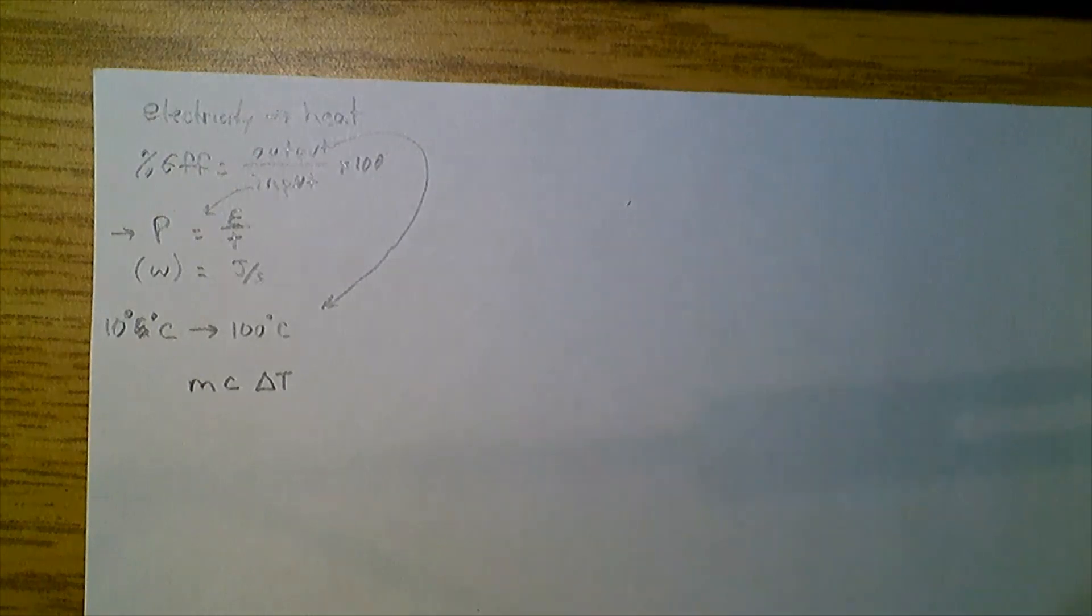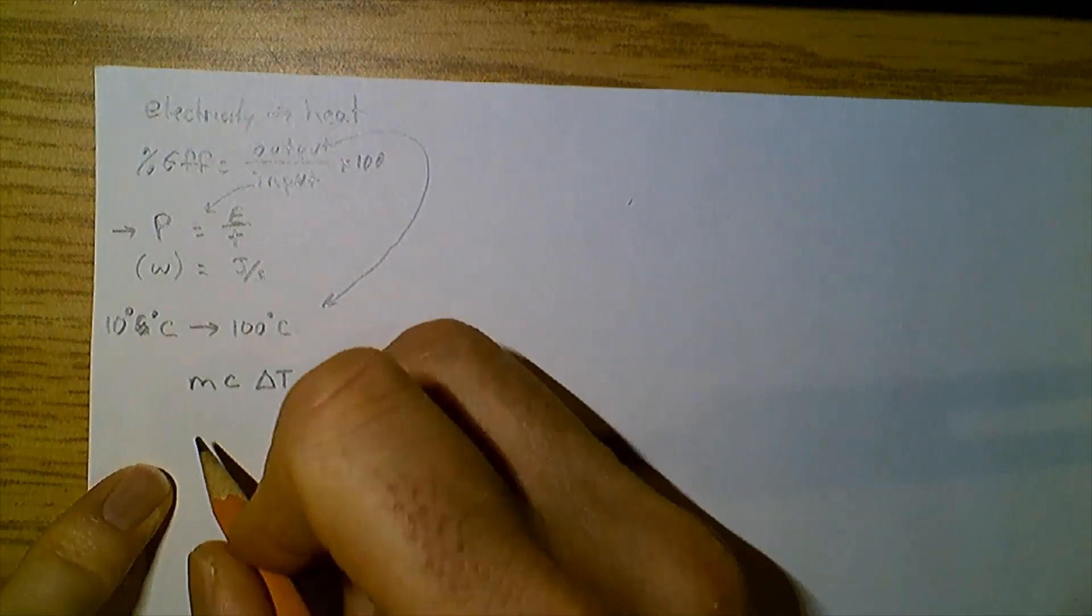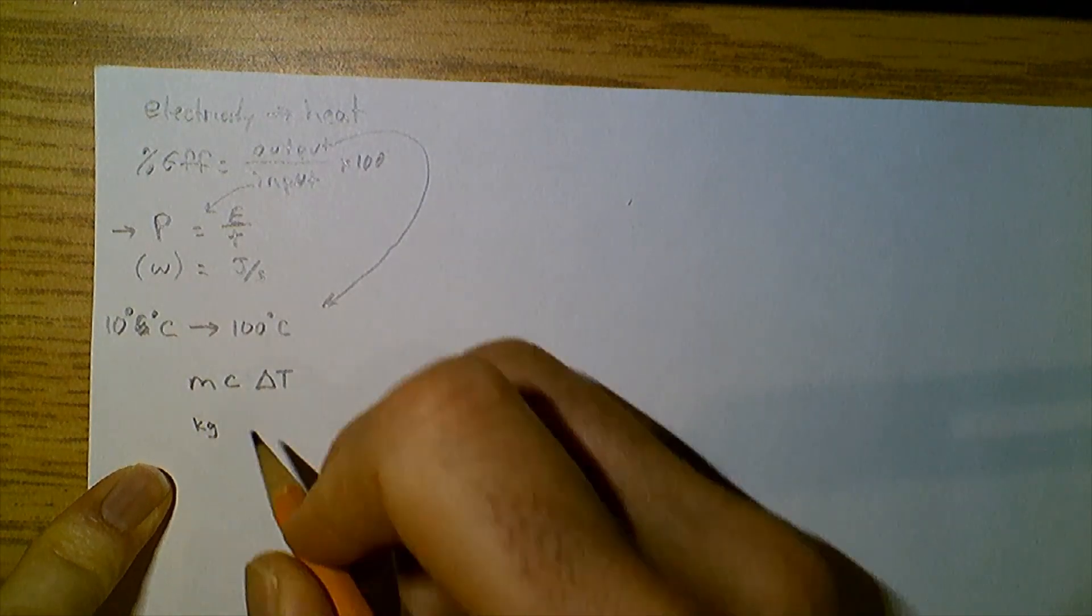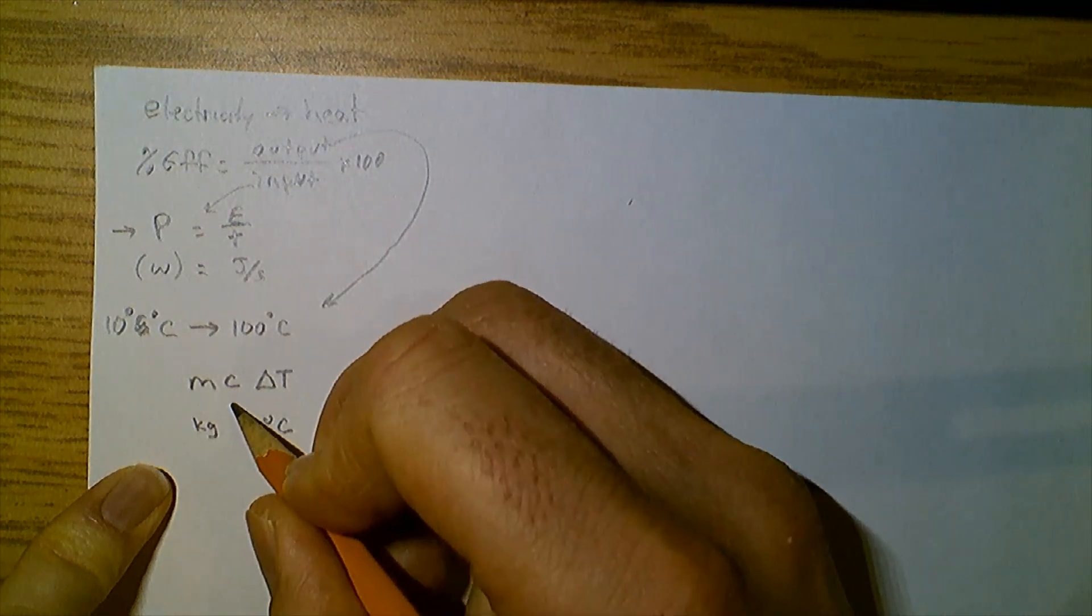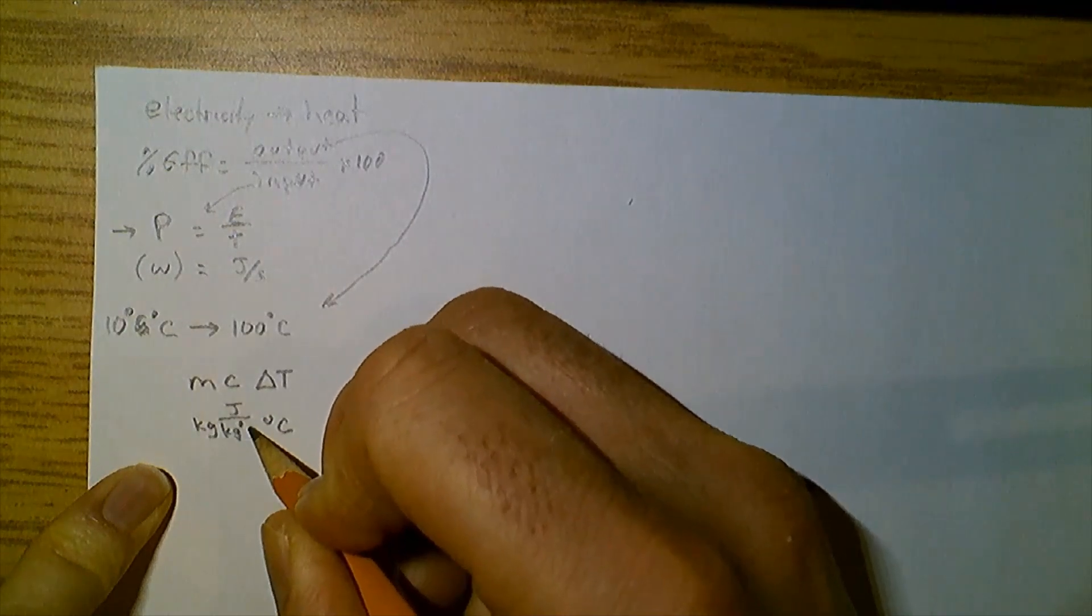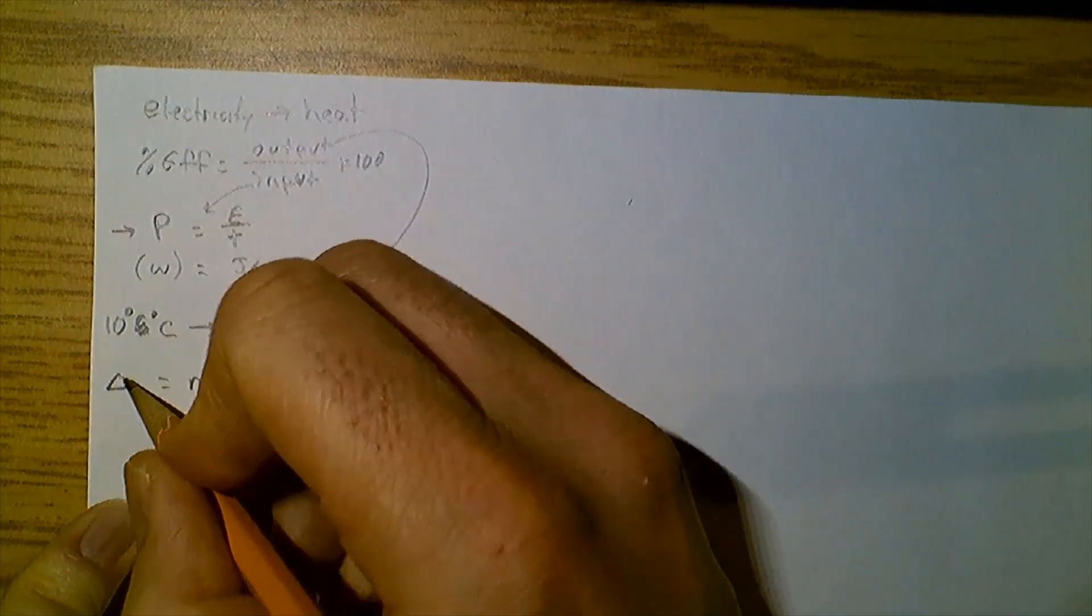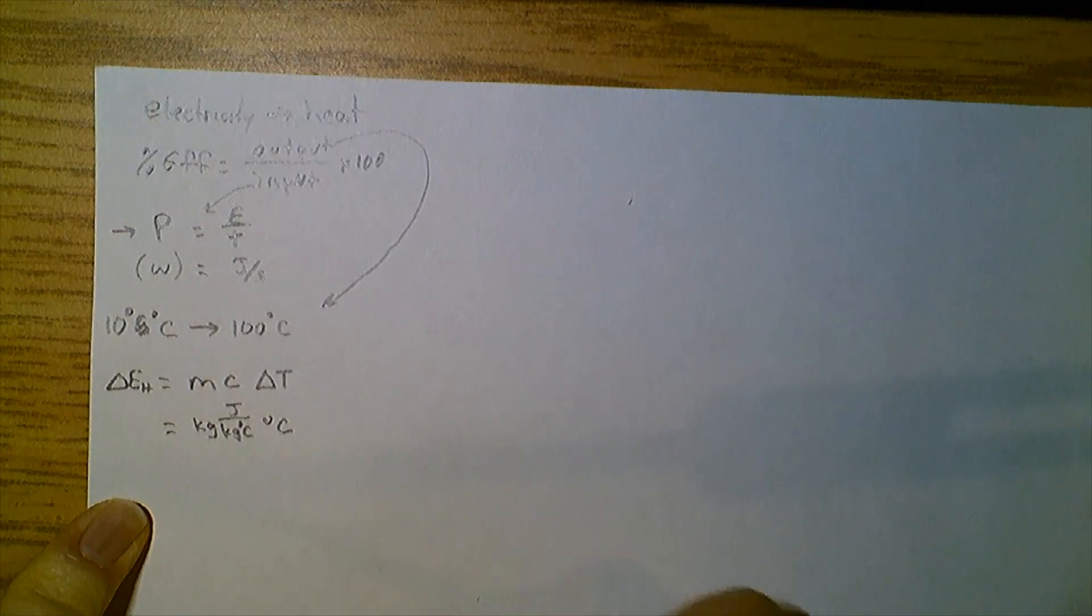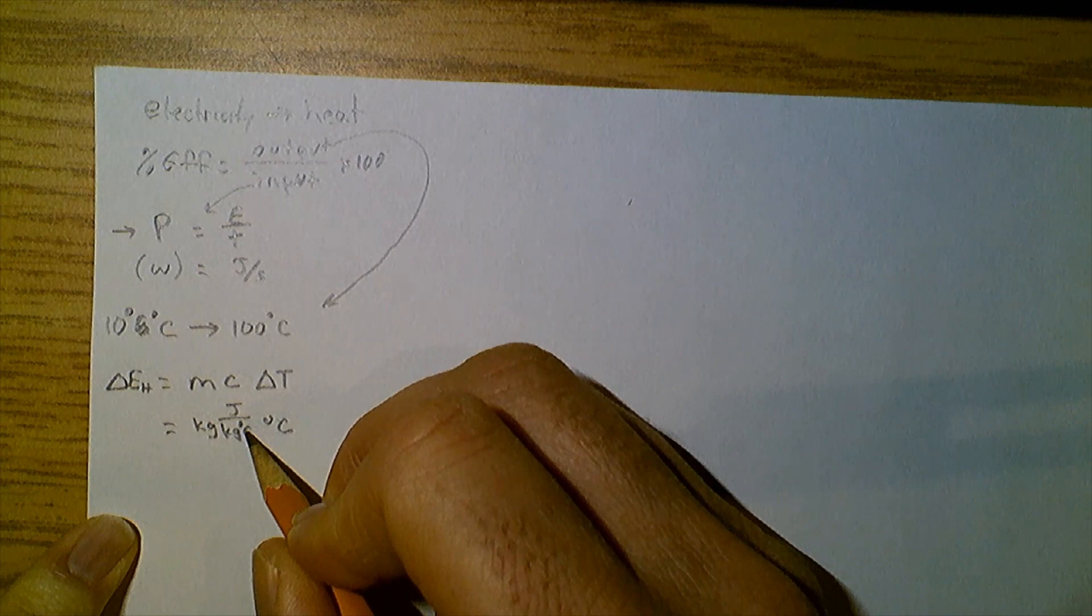So the units here are going to be mass, which is kilograms, temperature, which is degrees Celsius, and energy, joules, per kilogram degree Celsius. And that is going to equal our change in energy, that's heat, and kilograms divided by kilograms, degrees Celsius divided by degrees Celsius leaves only joules.